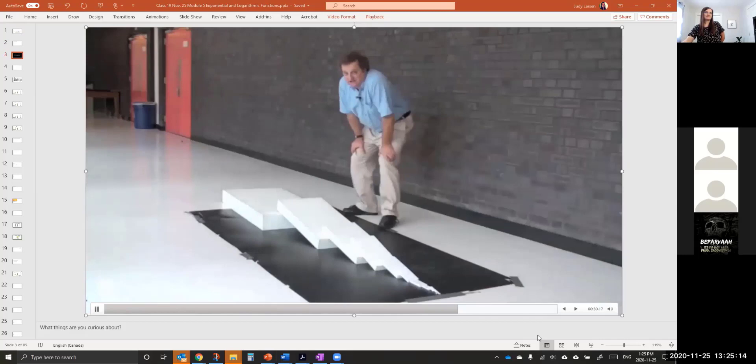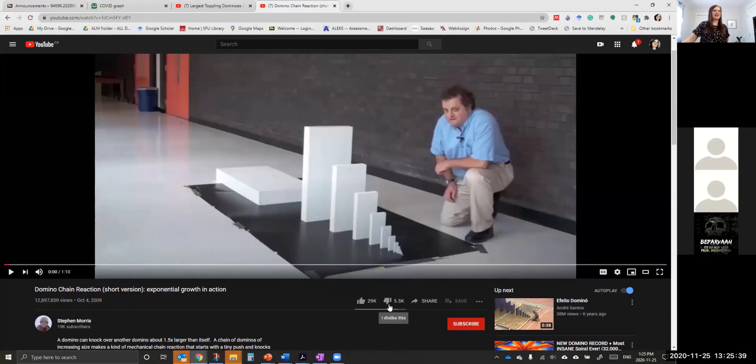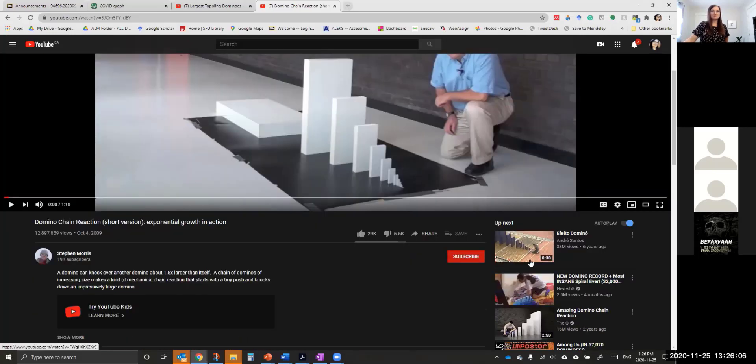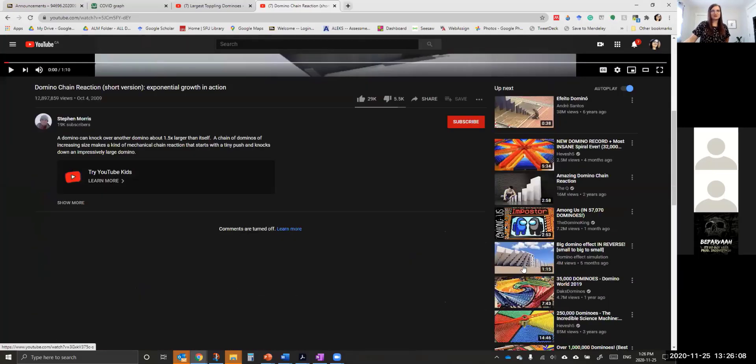That was thirteen dominoes. If I had twenty-nine dominoes, the last domino would be as tall as the Empire State Building. It's a really interesting prompt because, look at that tiny, tiny first piece. And just because each piece is one point five times the size in every direction, it creates the opportunity for you to basically topple a very large piece with very little energy because of that exponential growth.